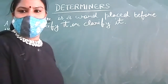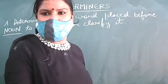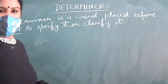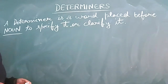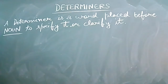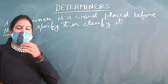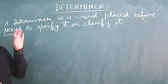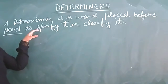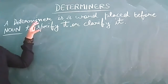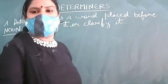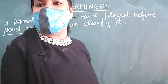We are doing determiners today. I have just written the definition: a determiner is a word placed before a noun to specify it or clarify it. The purpose of the name tells a story in itself — determiner means to determine.